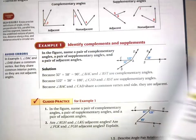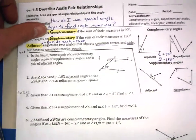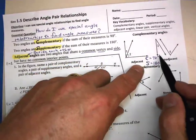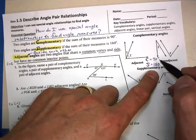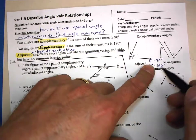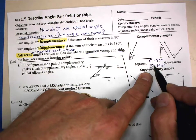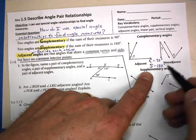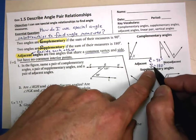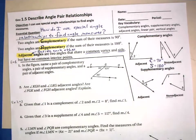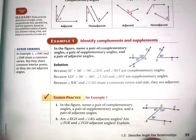Here's a trick to remember which is 90 and which is 180: C comes before S alphabetically, just as 90 comes before 180 numerically. Also, an S looks like two C's — one on top, one going backwards on the bottom. Two C's each worth 90 gives you 90 plus 90 equals 180. So complementary is always 90 and supplementary is always 180.